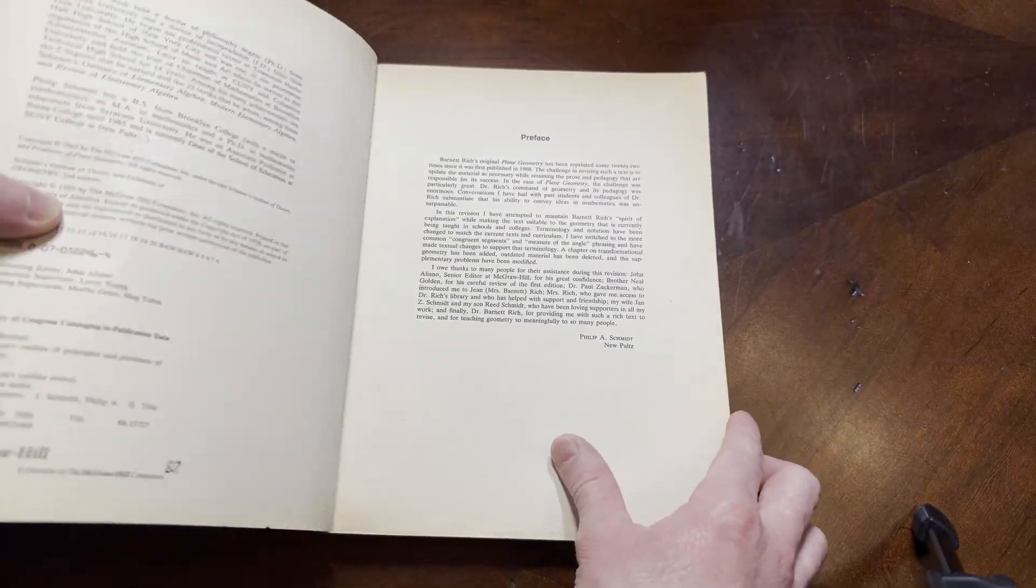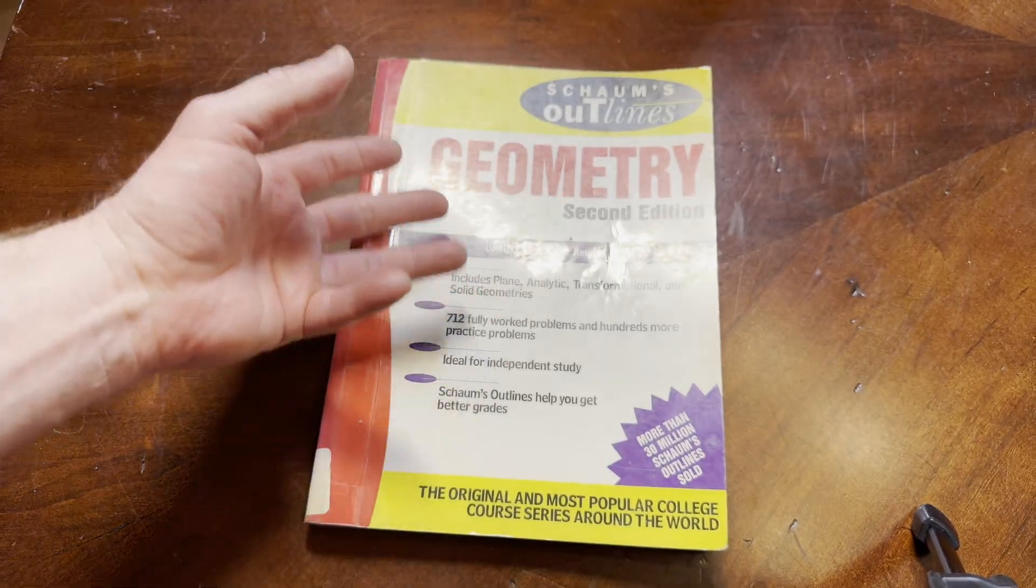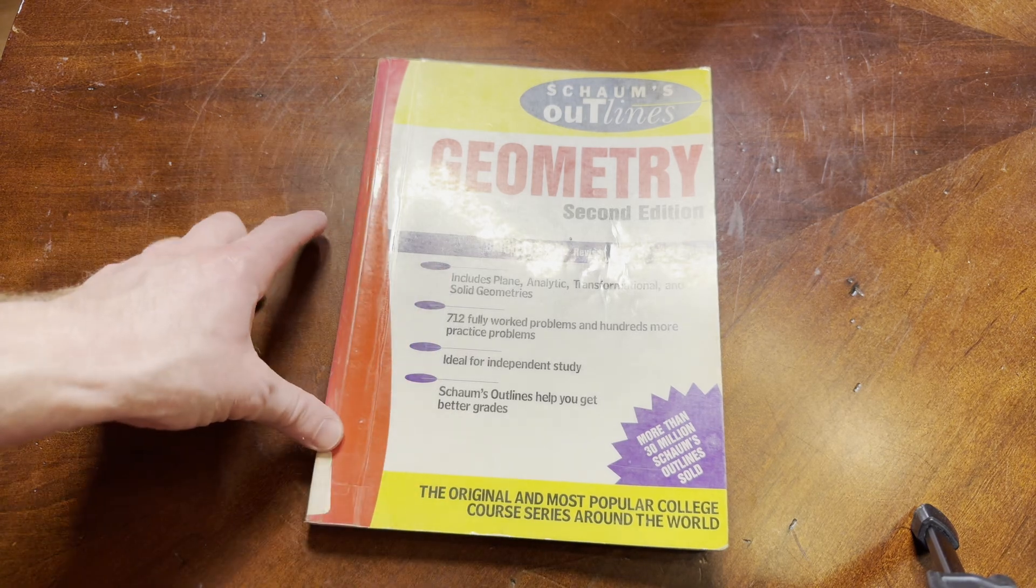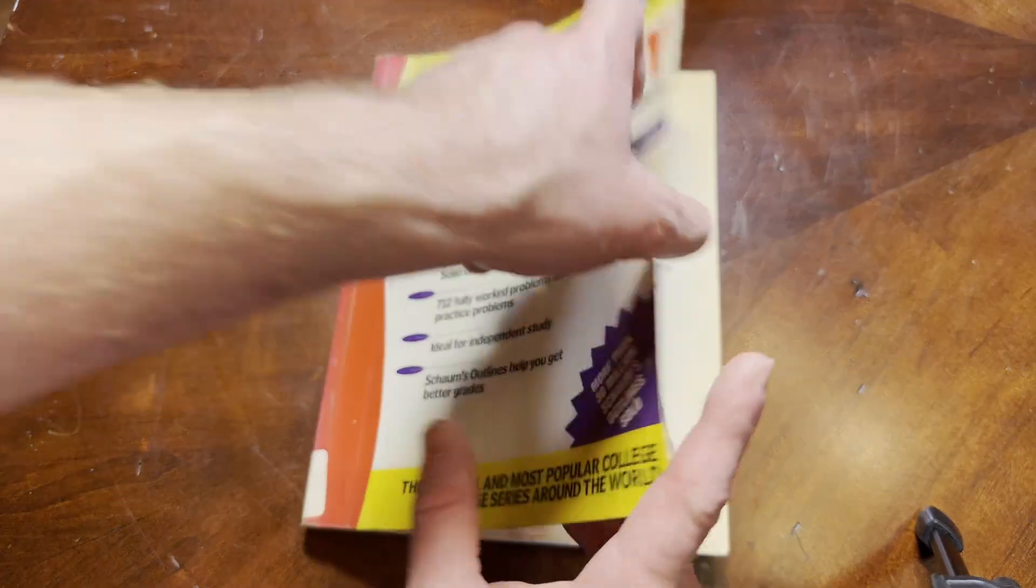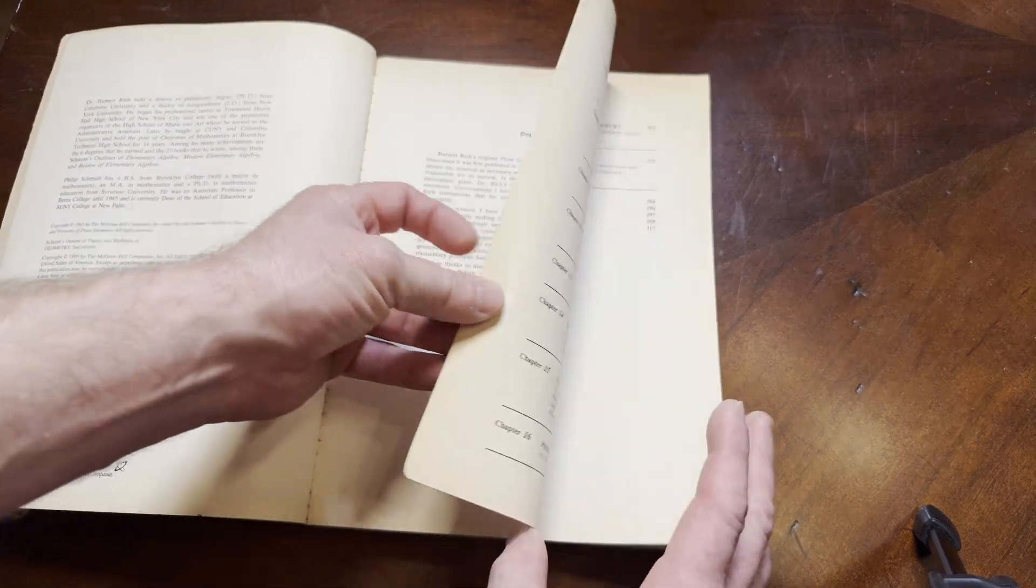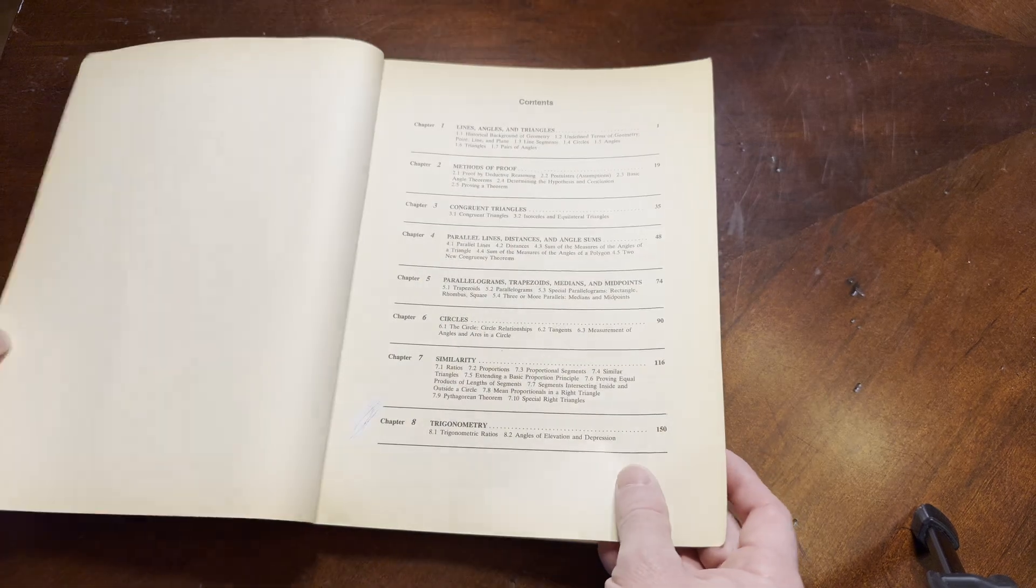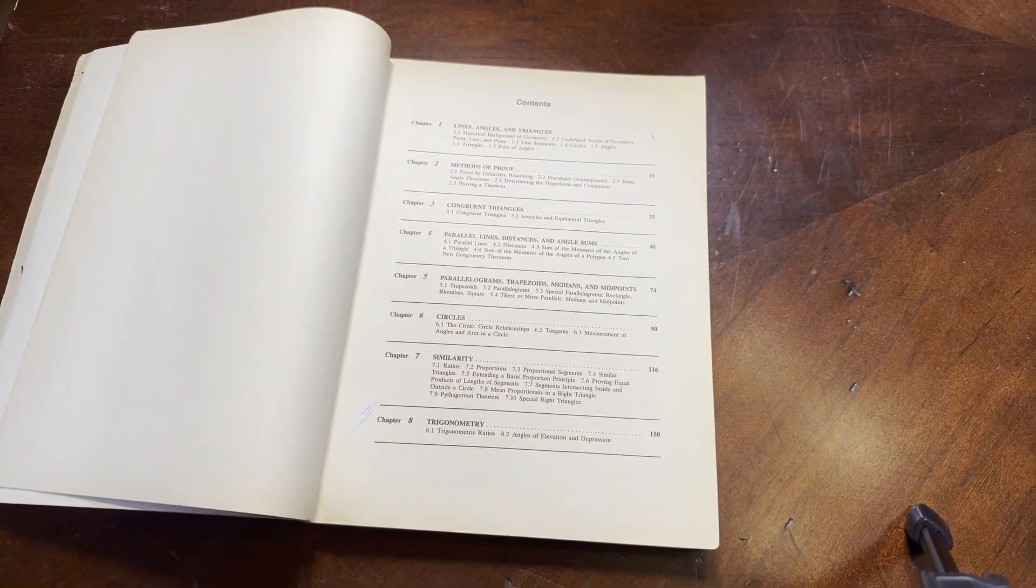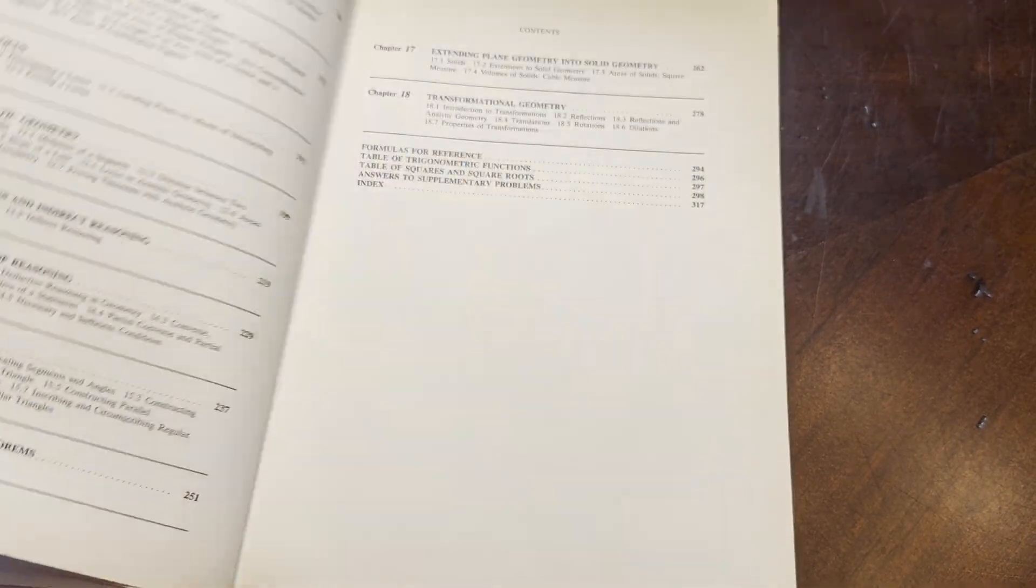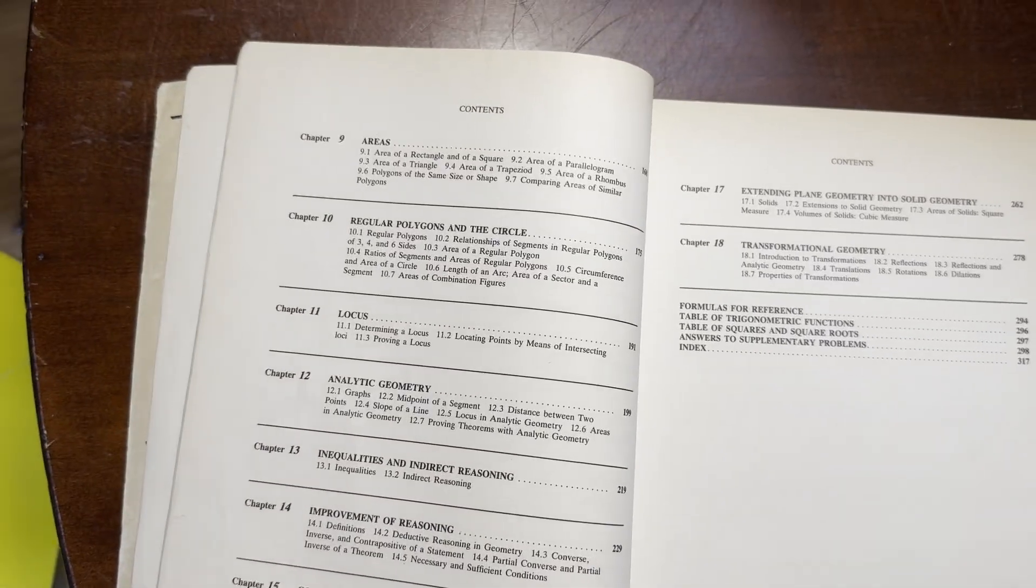This book is really good because you can use it to refresh all of the geometry that perhaps you've forgotten. You can also use it to learn new geometry. There's many reasons that you might need to learn geometry. For example, one reason could be that you are studying for the GRE. That's a test that has some geometry. Another reason might be that you are in high school and you want to learn geometry, or maybe you just want to learn geometry for the sake of learning geometry.